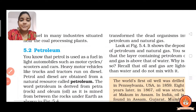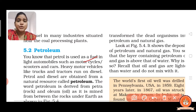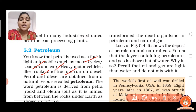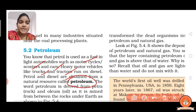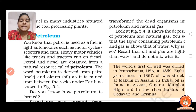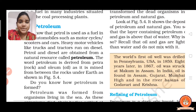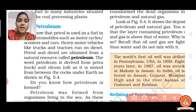Petrol is used as a fuel in light automobiles such as motorcycles, scooters, and cars, and also in heavy motor vehicles such as trucks and tractors which run on diesel. So petrol and diesel are both obtained from the natural resource called petroleum. The word petroleum is derived from 'petra' — so what is the meaning of petra?